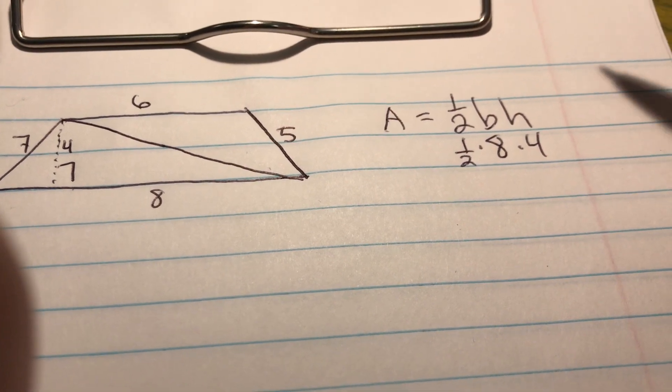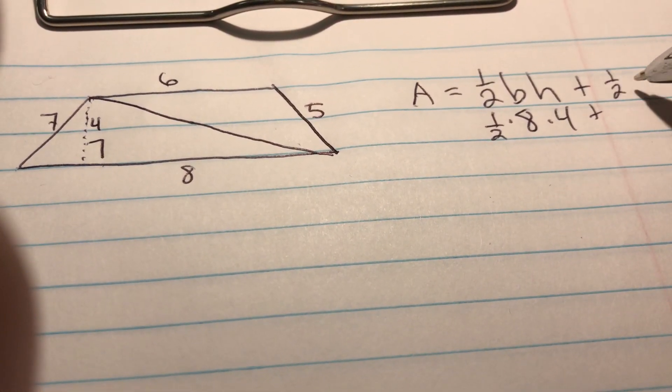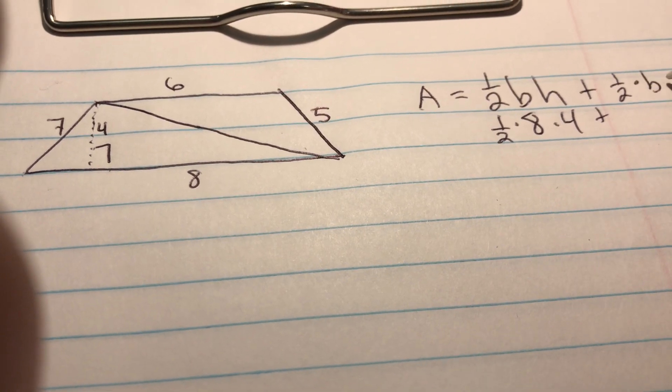Then we have another triangle we need to actually put the formula for as well. So we're going to add the other triangle to this. That's 1 half times the base times the height of that triangle.